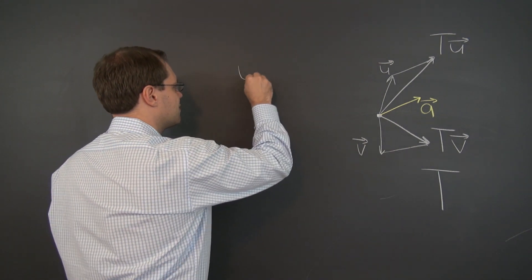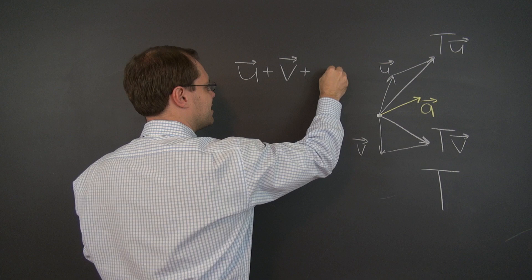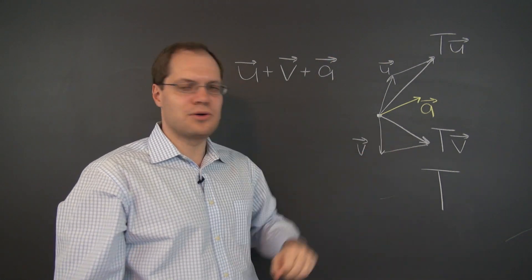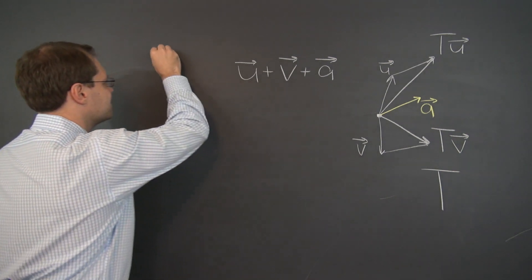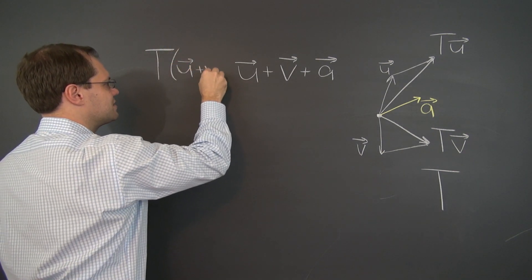Let me write it down: u plus v plus a. Here I think writing it in letters is better than drawing it on the board. And this is t of u plus v. That's adding them first and then transforming the result.